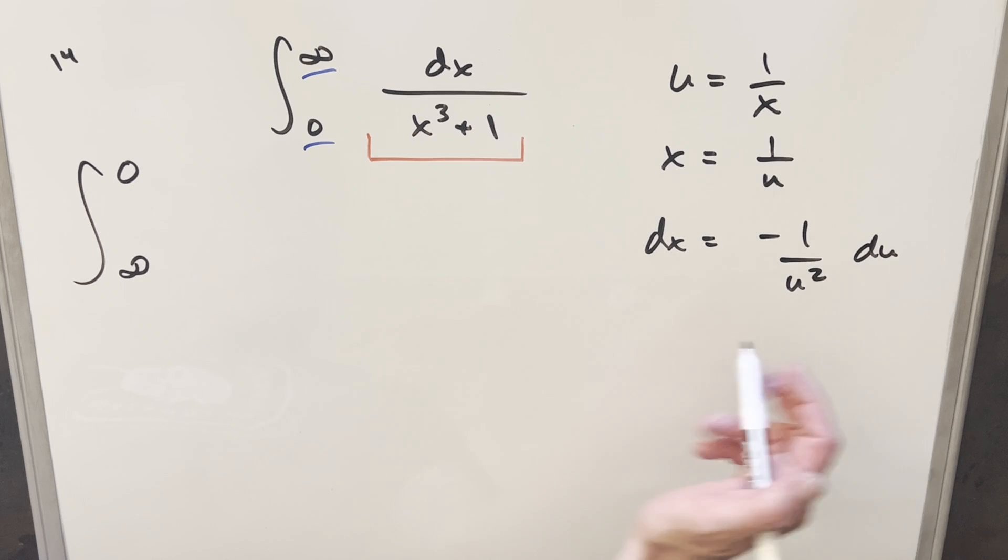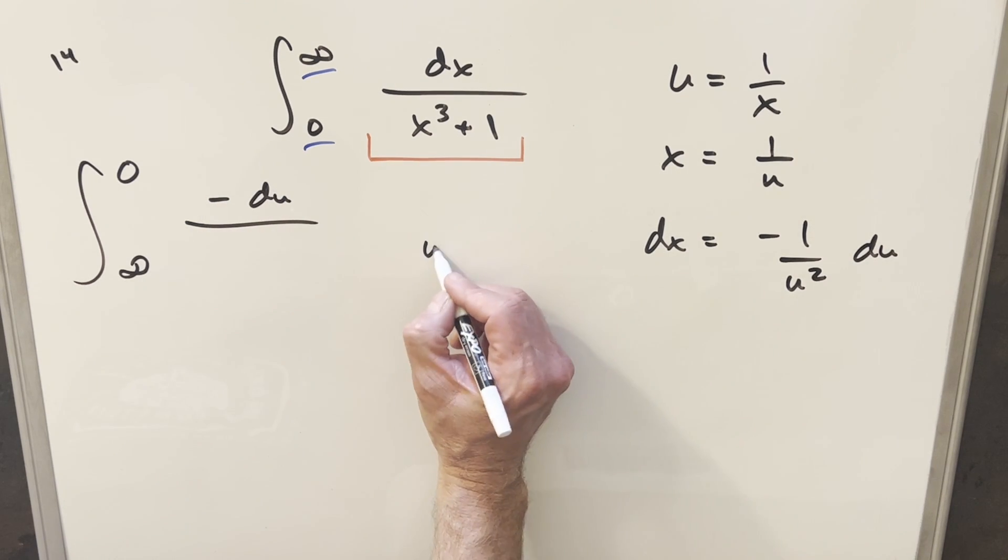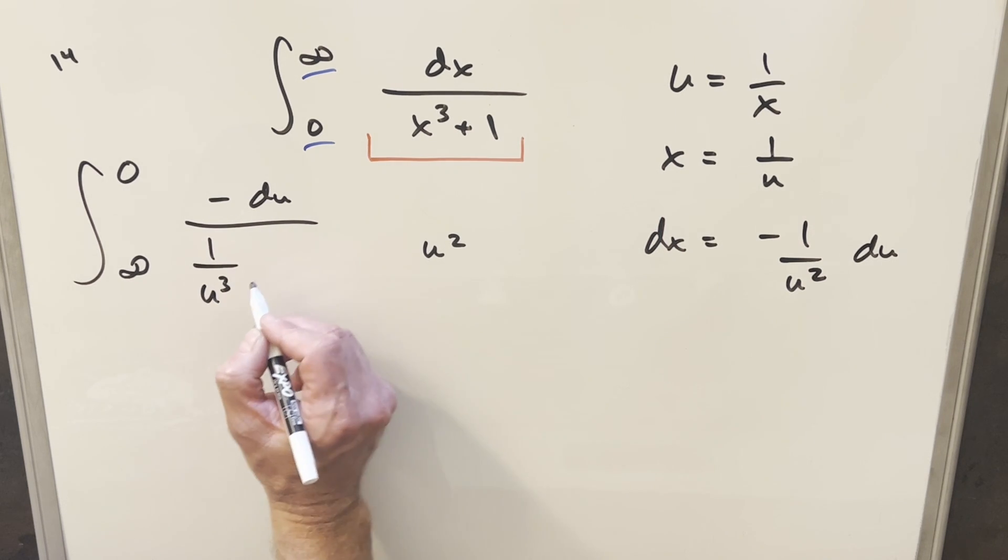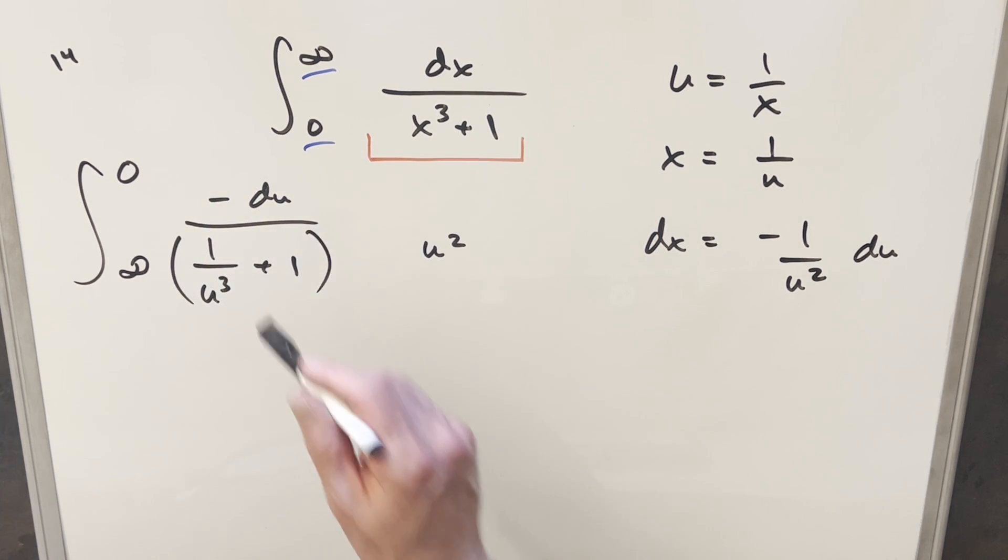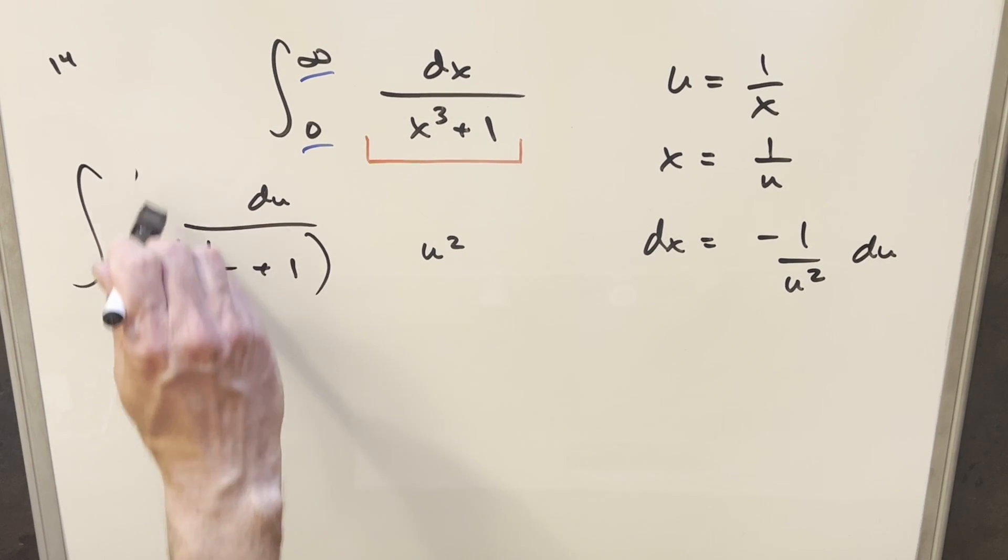So then for a dx value of this, but I'll kind of split it up. I'll write it like minus du. I'll bring the u squared over here. For x cubed, this is going to become 1 over u cubed now plus 1. So then I'll take this minus sign and use it to swap the bounds again to get it back to where we had it originally.